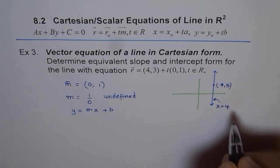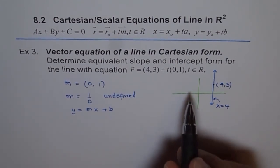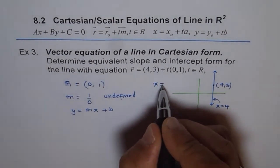This is x = 4. So a vertical line in Cartesian form or slope-intercept form cannot really be written. And the equation equivalent is x = 4.